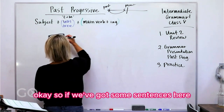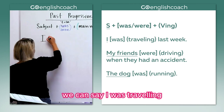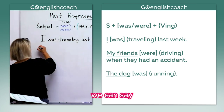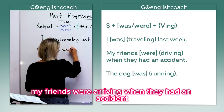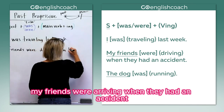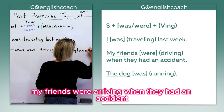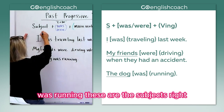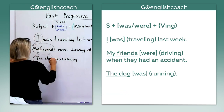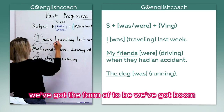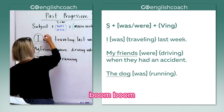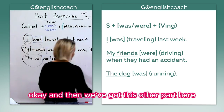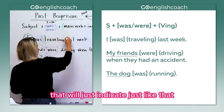So if we've got some sentences here: 'I was traveling last week,' 'My friends were driving when they had an accident,' 'The dog was running.' These are the subjects. We've got the form of 'to be' — was traveling, were driving, and was running. And then we've got the other part that indicates the action.